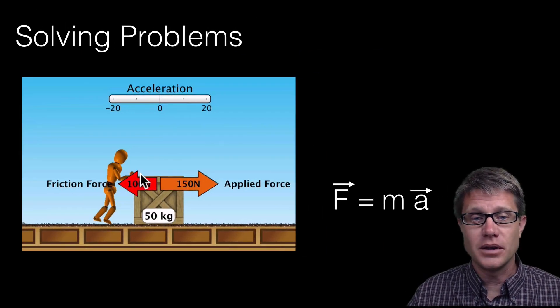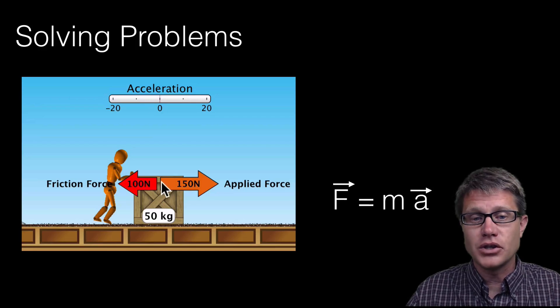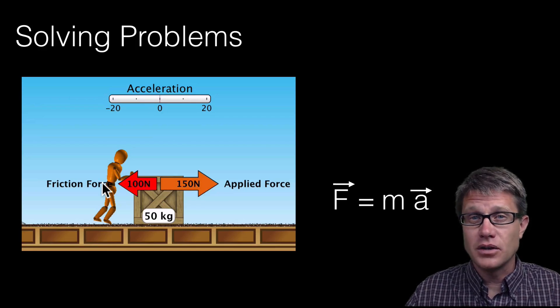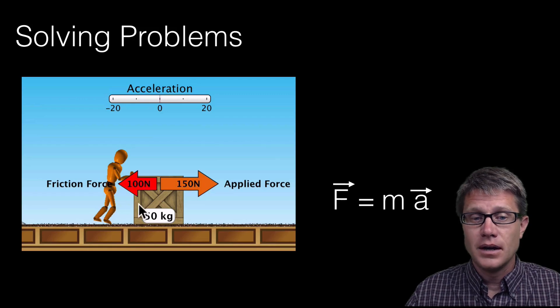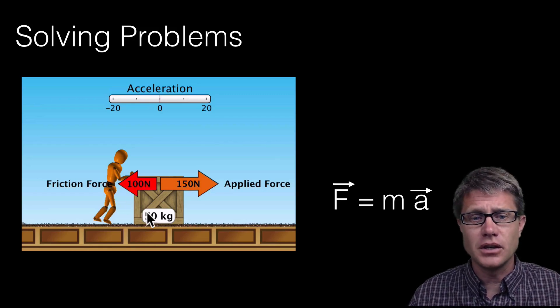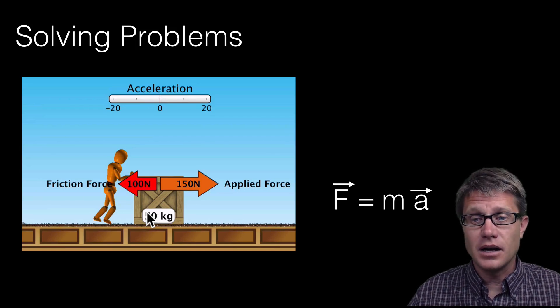And so you can solve problems knowing this. And so let us use this same simulation. I have got a robot pushing to the right with 150 newton force. We have a frictional force in the opposite direction of 100 newtons. And then we have a mass of 50 kilograms. So could you figure out the acceleration of this box as you are pushing it across the ground?